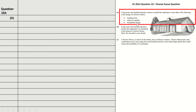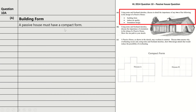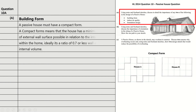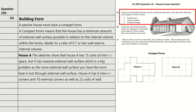I'm going to discuss building form and foundation design. For building form, firstly, a passive house must have a compact form. I have an example here in the diagram of two potential houses. A compact form means that the house has a minimum amount of external wall surface possible in relation to the internal volume within the home. Ideally, it's a ratio of 0.7 or less wall area to internal volume. House A has 15 units of internal space but has a massive external wall surface, which is a big problem — the more external wall surface you have, the more heat is lost.